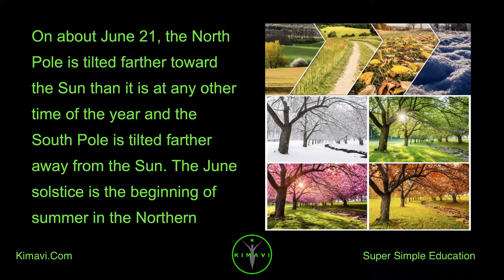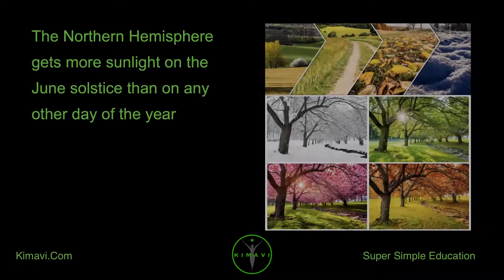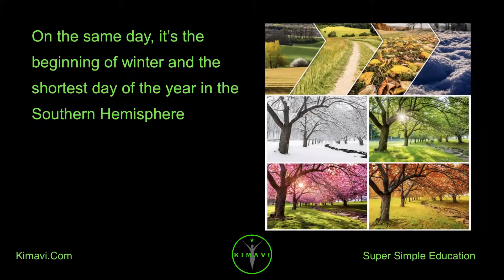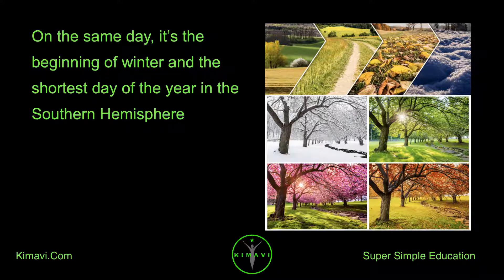The June solstice is the beginning of summer in the Northern Hemisphere. The Northern Hemisphere gets more sunlight on the June solstice than on any other day of the year. On the same day, it's the beginning of winter and the shortest day of the year in the Southern Hemisphere.